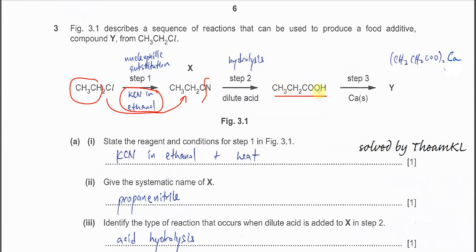After that, once it's formed this propanoic acid, this one will react with calcium. So it will form organic salt. So you'll form this calcium propanoate. This is the whole flow for the question.